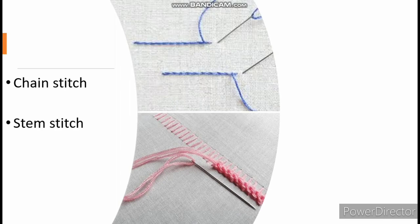Stem stitch got its name — you guessed it — from being used to create flowers, stems, and vines. But really, it is a nice option for anything that needs to curve. Similar to the split stitch, start by creating one straight stitch forward. Then bring the needle up close on the side of the fabric, but instead of going through the center of your initial stitch, just go to the side of the stitch.